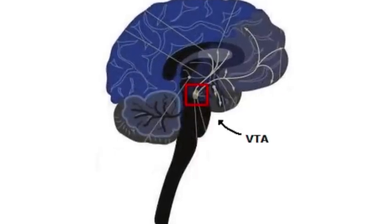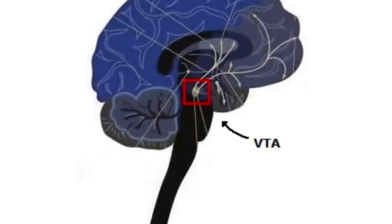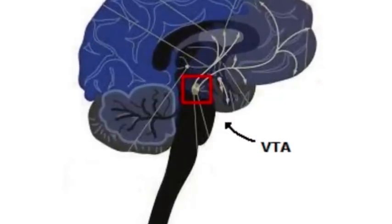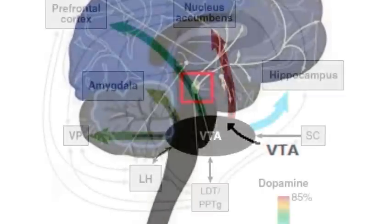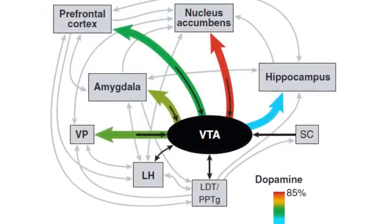In small doses, it activates D2 receptors, which reinforces ongoing thoughts and movements. If you're eating pizza, the pleasant taste will activate dopamine neurons, raise dopamine concentrations in the brain, and you'll feel motivated and keep on eating.